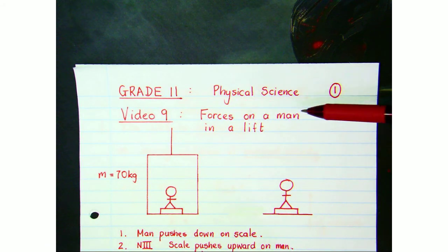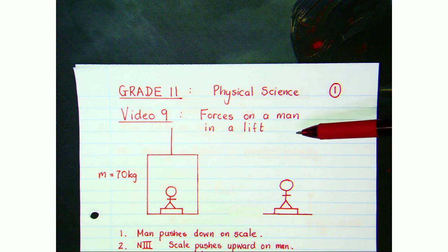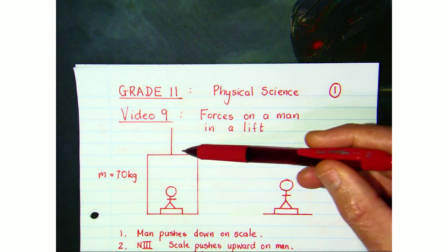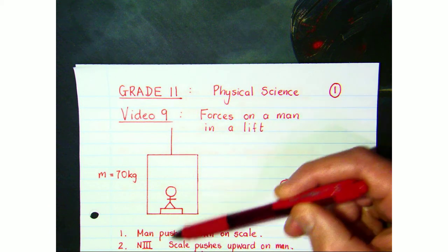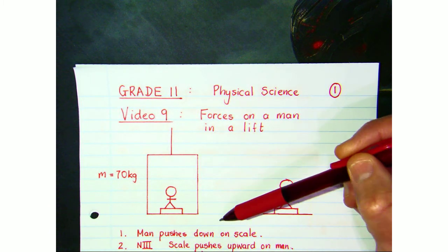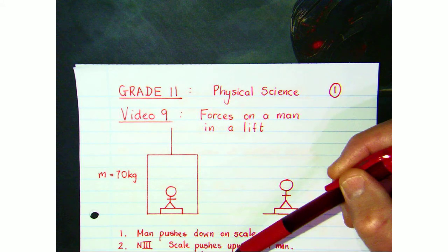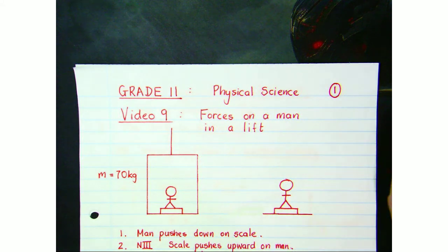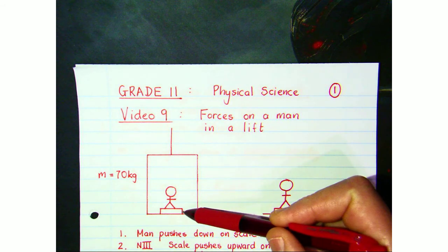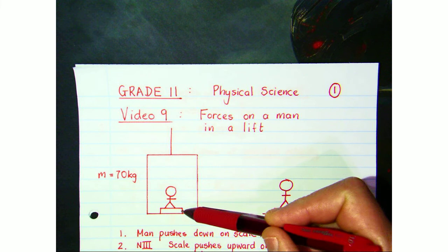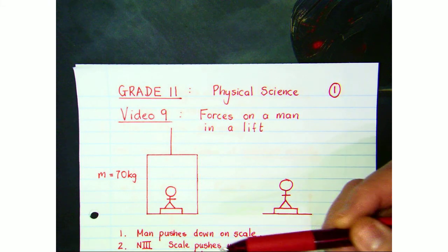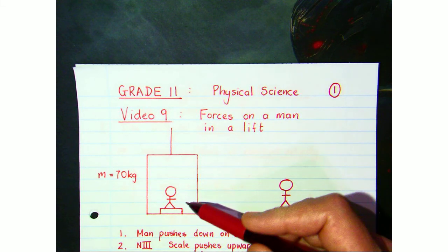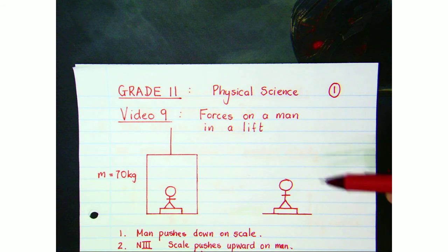This is video 9 on the grade 11 chapter on Newton's laws, and in this video we're looking at the forces on a man in a lift. In our notes we've looked at the entire lift as a whole with a tension up and a weight down, but in this video we're looking at what's going on inside the lift. We're using a Newton's scale — not a regular bathroom scale — so it gives a reading in Newtons rather than kilograms.